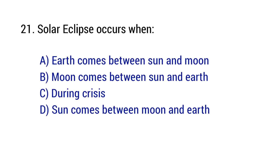Question number 21. Solar eclipse occurs when? The right answer is option B: Moon comes between sun and earth.